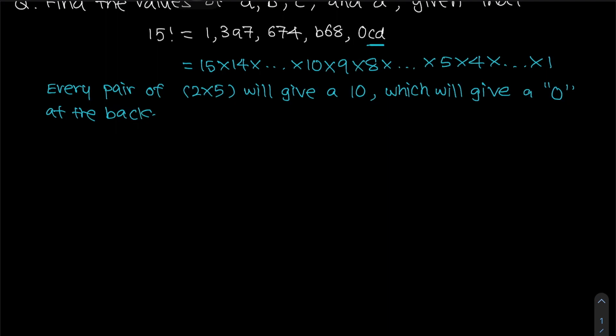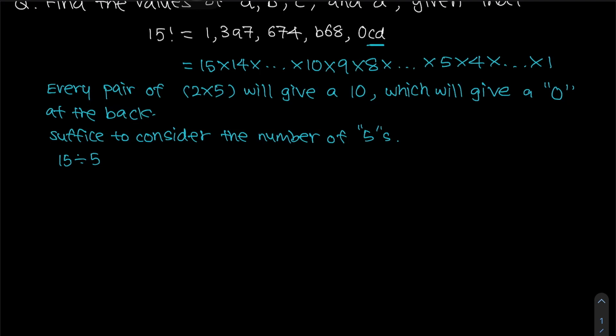Since there are more 2s than 5s, it is sufficient to consider the number of fives. How many fives do we actually have? Five has one five, 10 has another five, and 15 has another five. So the count is 15 divided by 5, which equals 3. We have three fives, which means we must have three zeros at the back. Therefore, three pairs of 2 times 5 will give three zeros.